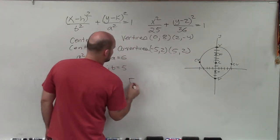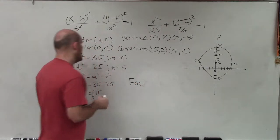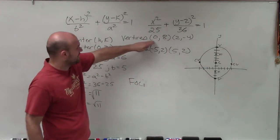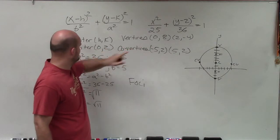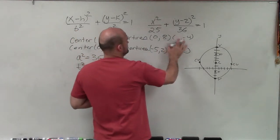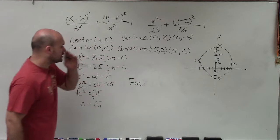And then the last one, which would be the foci, those are going to be, again, on the same thing with, what did I do wrong? 0. That should be 0. The foci, remember, lies on the major axis with the vertices and the center.